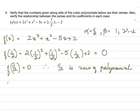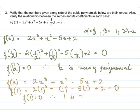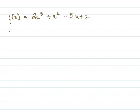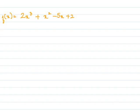Next we check f(1) by substituting x = 1 into f(x) = 2x³ + x² - 5x + 2. This also gives 0, so 1 is a zero of the polynomial. Then for f(-2), substituting x = -2 gives 0 as well, so -2 is a zero. Therefore all three values are zeros of the polynomial.